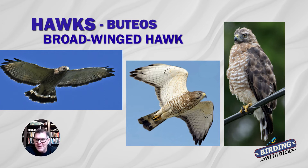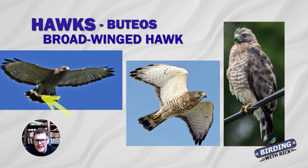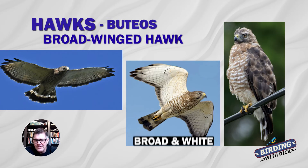Another common hawk across North America is the broad-winged hawk. These guys love the forest — they're secretive hawks, sitting deep in the forest on an exposed branch staring right at you. It's smaller and more compact. What you're looking for is a single white stripe in its tail, and a black line on the trailing edge of its wings — similar to a red-tail but with that single white stripe. They're also pretty clean white underneath their wings. Broad-winged hawk.